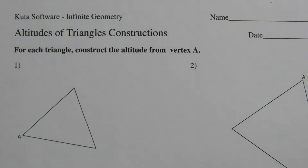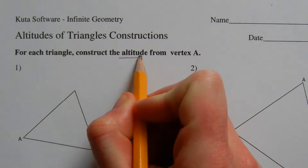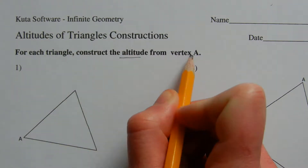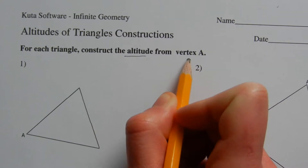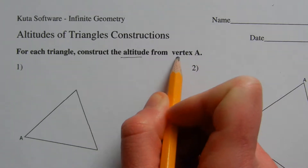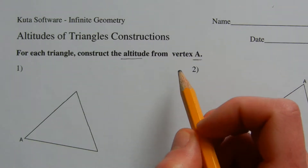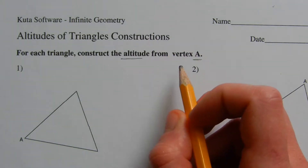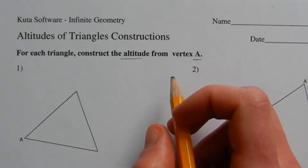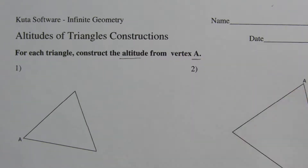In this video we're going to start the CUDA software infinite geometry free worksheet: altitudes of triangles constructions, numbers 1 through 4. Our directions are to construct the altitude from vertex A. An altitude is a line that goes from the indicated vertex — in this case vertex A — to the opposite side, and when it intersects that opposite side it is perpendicular to that side.